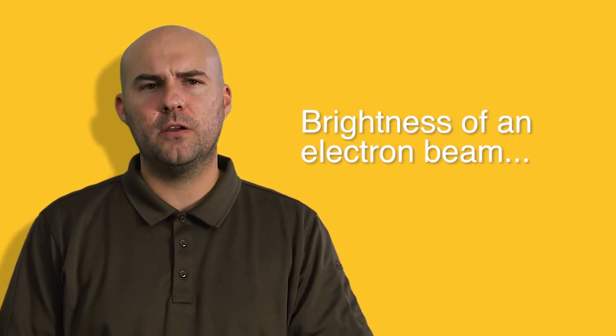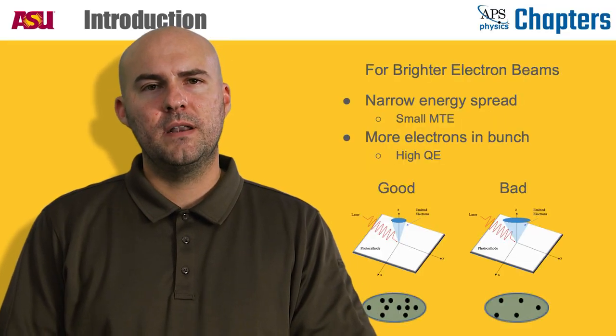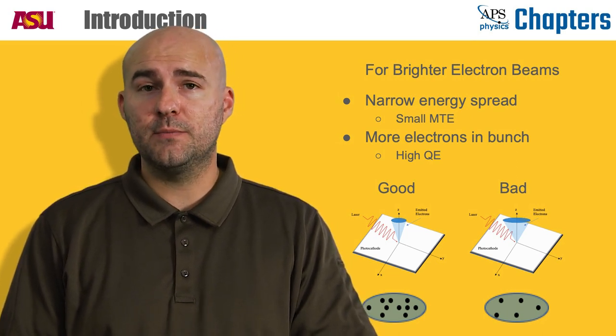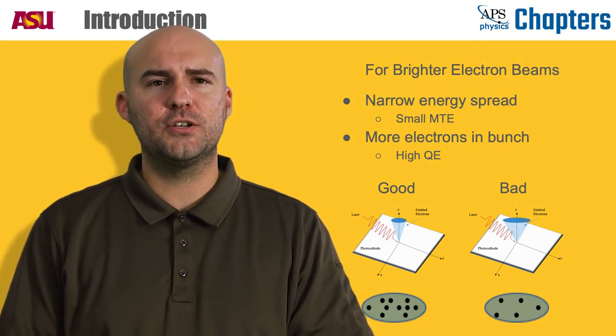Now that we understand a bit about photoemission and bright electron sources, let's dive into what we mean when we talk about the brightness of an electron beam and how we go about increasing it. Now we can all think of making a room brighter by turning on more lights or adjusting a dimmer switch, but how exactly do we make an electron beam brighter?